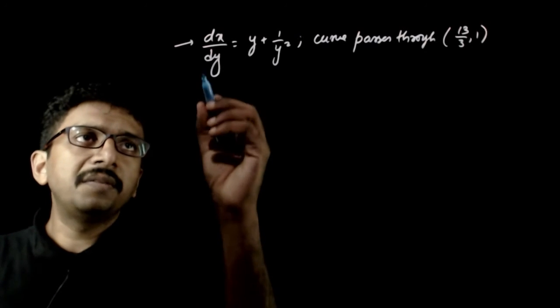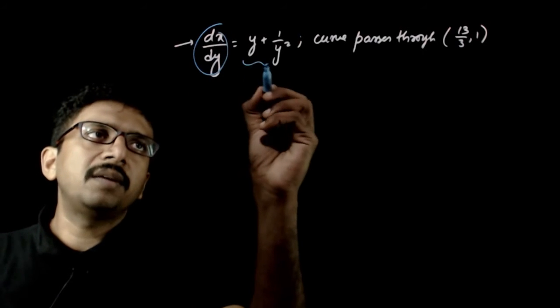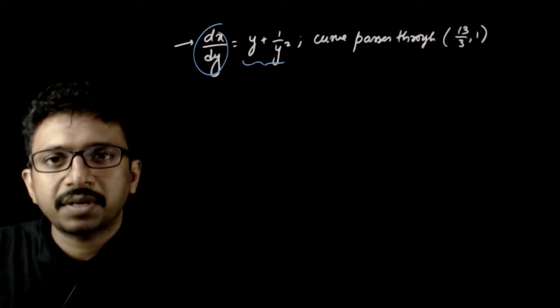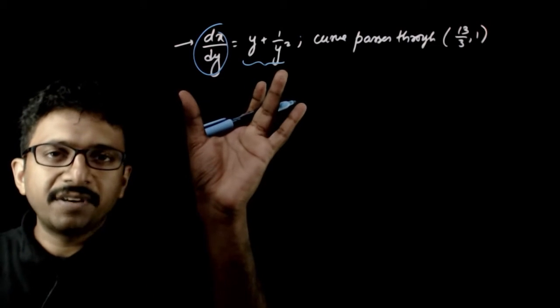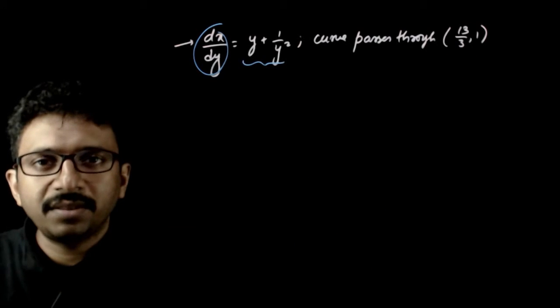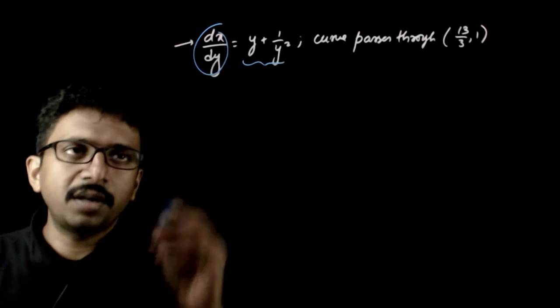Welcome students. In this question you have given that dx by dy is equal to y plus 1 by y square, and this is a differential equation and the solution of this curve passes through 13 by 3 comma 1. You are asked to find the particular solution.